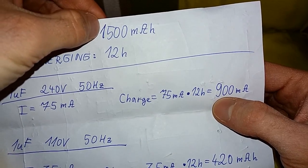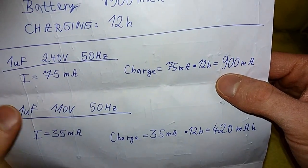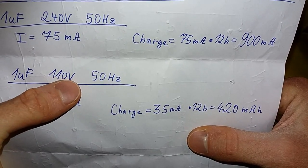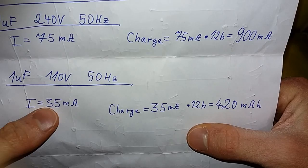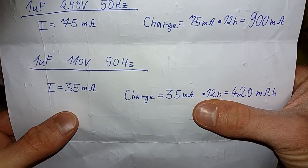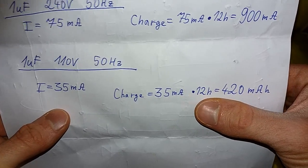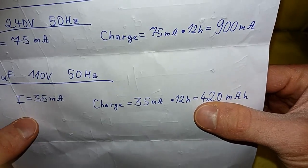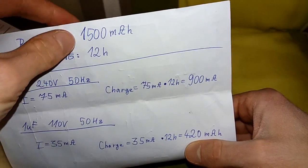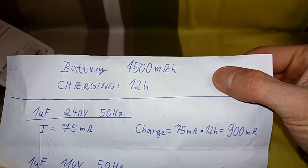And if your voltage is 110 volts 50 hertz, the current will be just 35 milliamps. And the charge of the battery will be 35 milliamps times 12 hours and gives just 420 milliamp hours - just a small fraction of the given capacity. That's strange indeed.